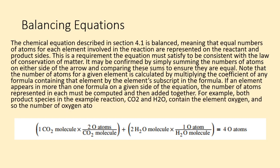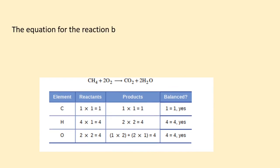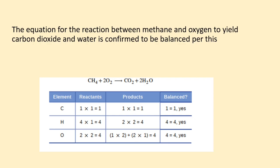For example, both product species in the example reaction, CO2 and H2O, contain the element oxygen, and so the number of oxygen atoms on the product side of the equation is as shown below. The equation for the reaction between methane and oxygen to yield carbon dioxide and water is confirmed to be balanced per this approach, as shown here.